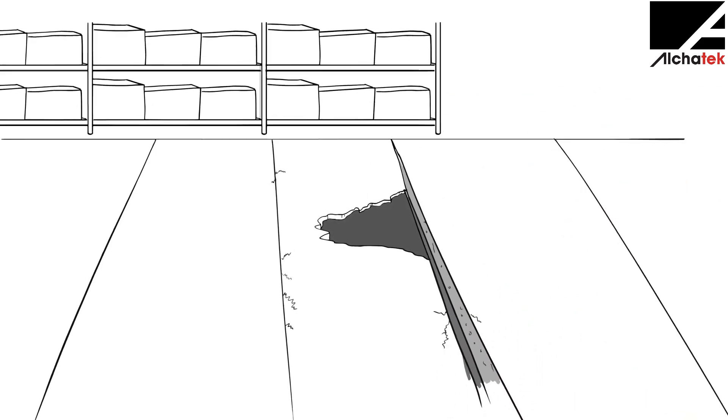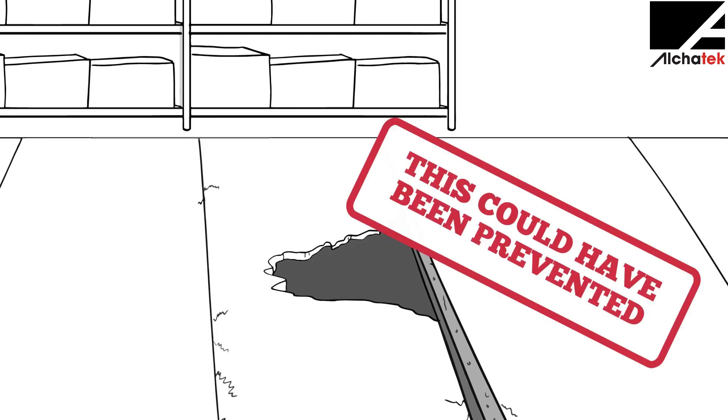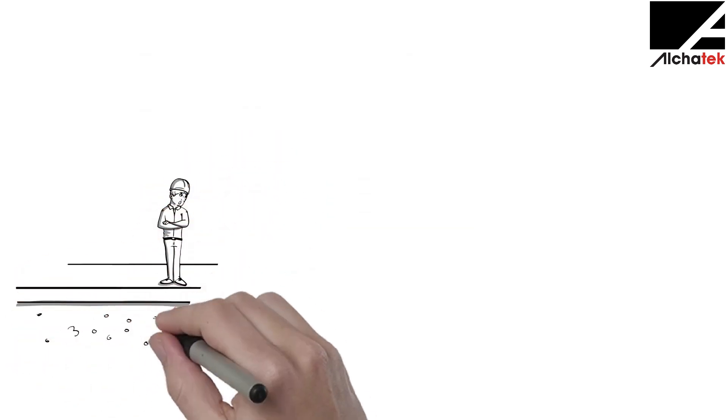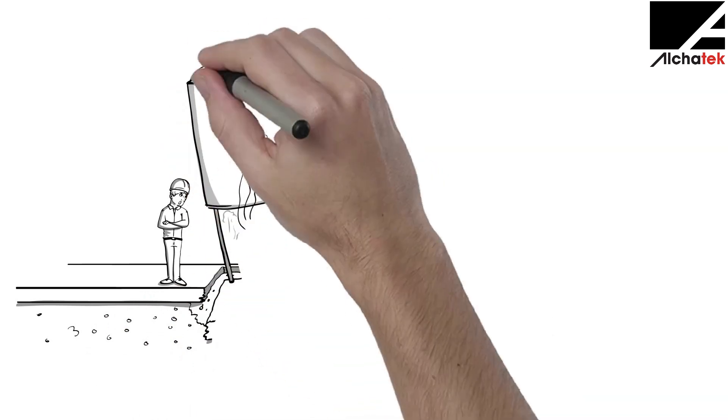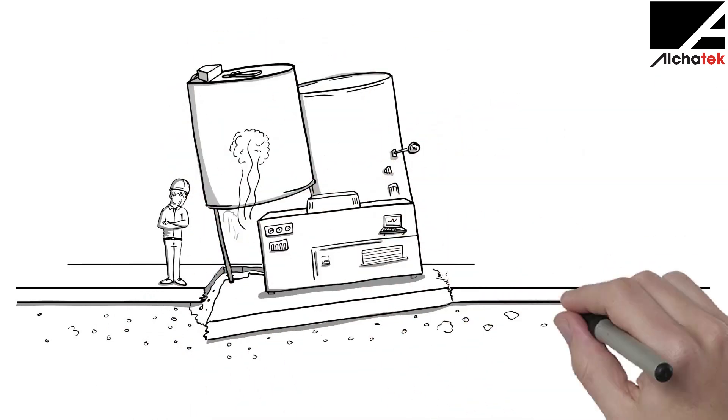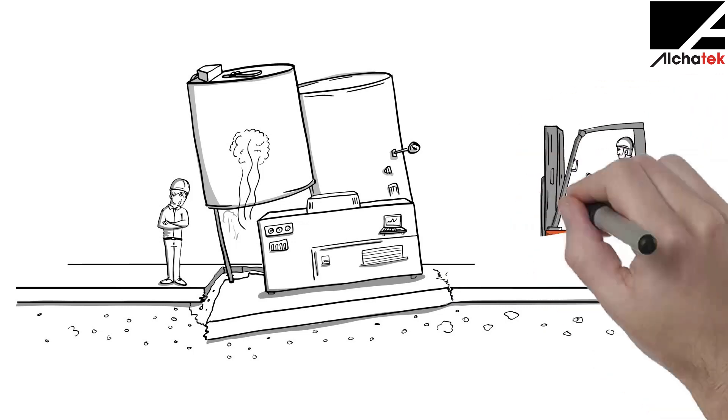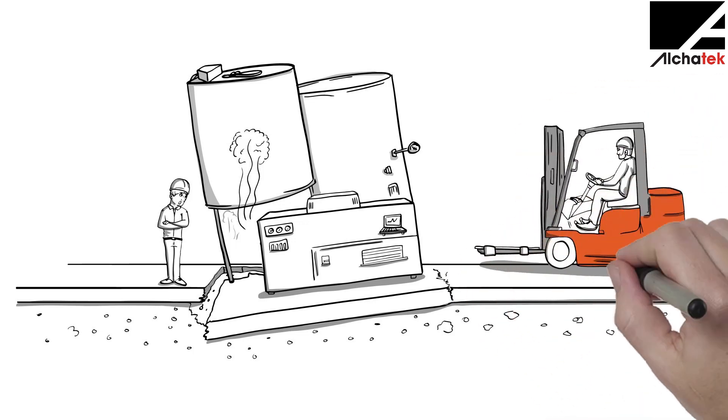In worst-case scenarios, they can collapse completely. And not repairing it isn't really an option. Even without a catastrophic collapse, slightly uneven concrete can cause expensive damage to property, vehicles, and factory equipment, sinkholes, and even personal injury.